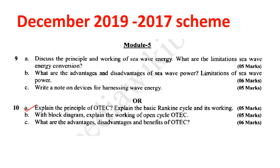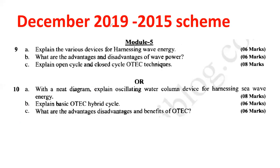Another question, Q10a: explain the principle of OTEC and explain the Rankine cycle. Q10b: explain the working of OTEC with the help of a neat block diagram. What are the advantages, disadvantages, and benefits of OTEC? You can easily score full 16 marks. Additionally: explain open cycle and closed cycle of OTEC; explain the basic OTEC hybrid cycle; and what are the advantages and disadvantages of OTEC? These are easy questions.